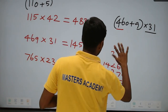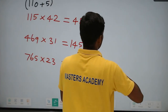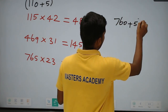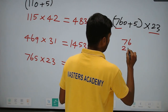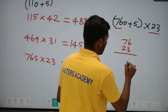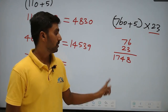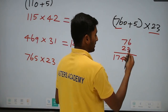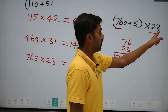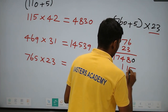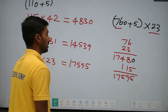Now we are going to discuss 765 into 23. Split 765 into 760 plus 5. The 2-digit part: 76 into 23 using the 2-digit shortcut gives 1748. Then 5 into 23: 5 into 20 is 100, plus 5 into 3 is 15, giving 115. Adding 17480 plus 115 gives 17595.